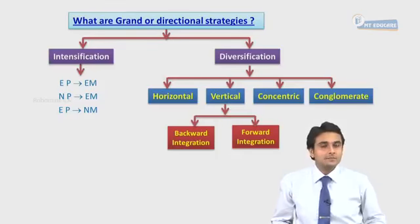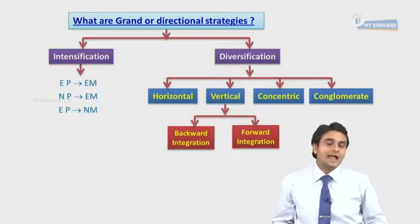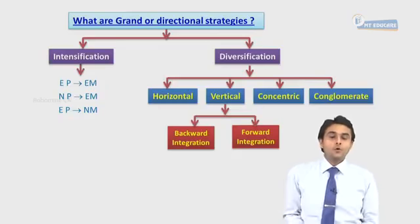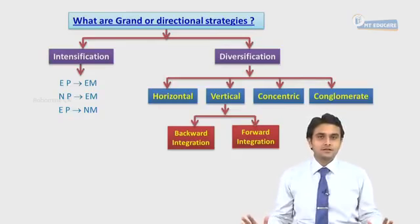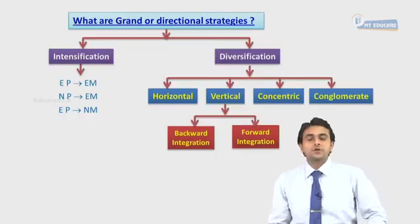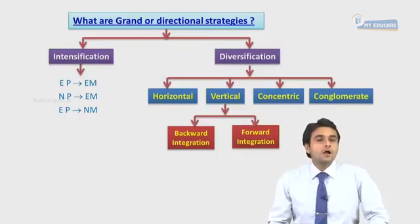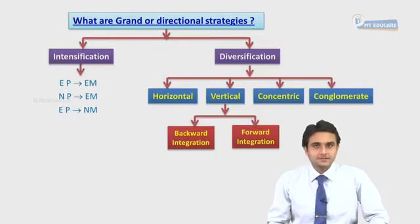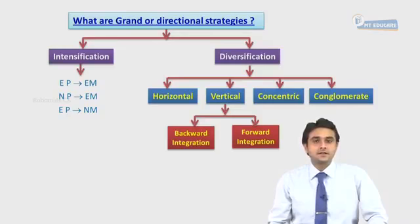This is to combat the bargaining power of suppliers and consumers respectively. Going sideways in the chain of distribution is nothing but horizontal diversification, which includes acquiring businesses that are into similar products or services, or entering into similar lines of business.